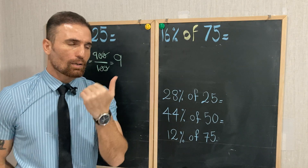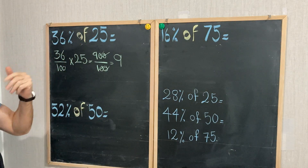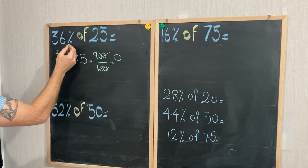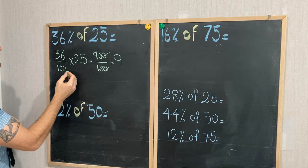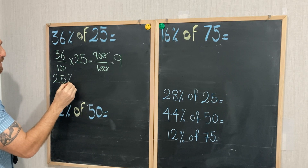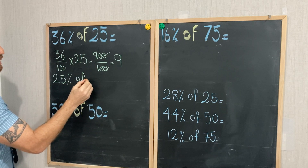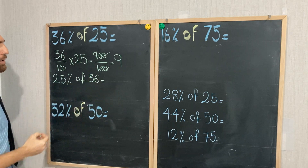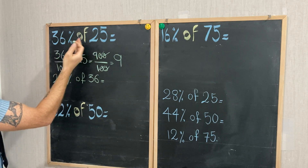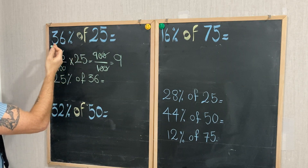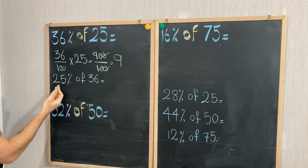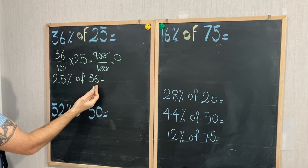Let me teach you a trick to solve this type of question in less than one second. 36 percent of 25 is the same as 25 percent of 36. In percentage problems, we can swap the positions of the two numbers. So 36 percent of 25 is the same as 25 percent of 36.